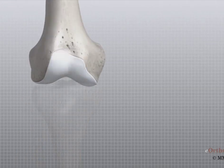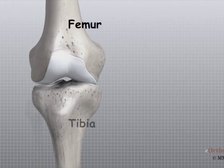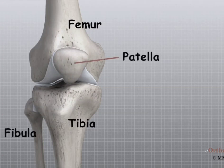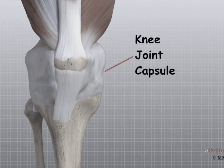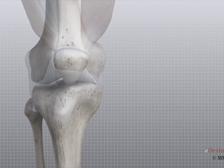The knee is the joint where the femur and the tibia meet. The patella, or kneecap as it is commonly called, is made of bone and sits in front of the knee. The knee joint is a synovial joint. Synovial joints are enclosed by a ligament capsule and contain a fluid called synovial fluid that lubricates the joint.